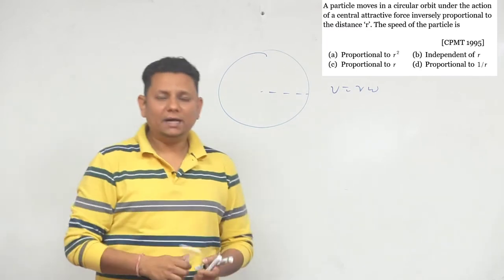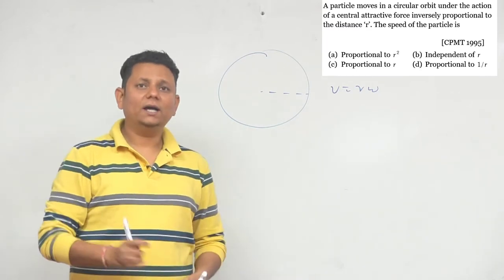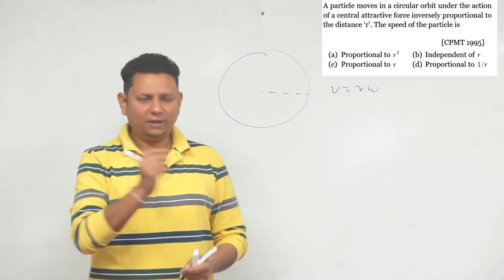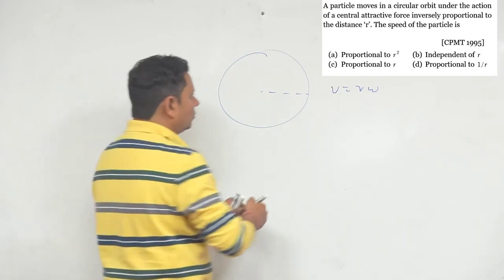Here we are told that circular motion is happening such that the force is proportional to one by r. So the force we can write as the centripetal force.